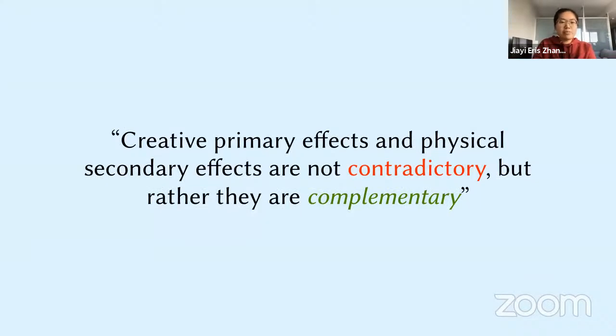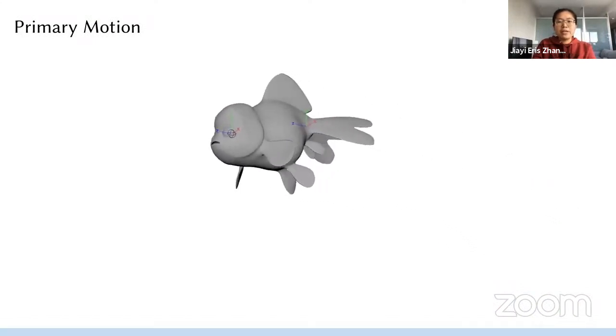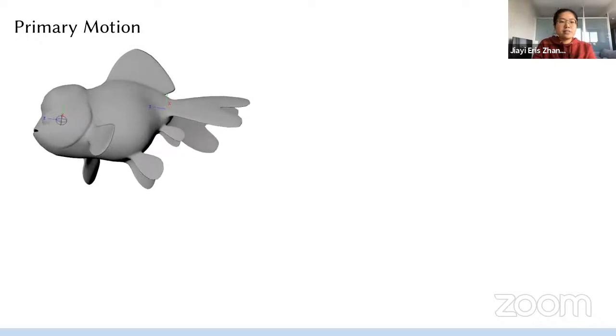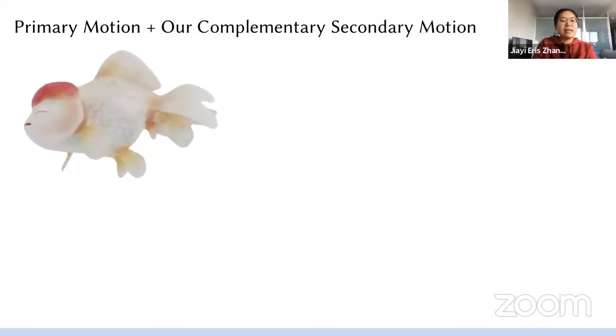Instead, we advocate that creative primary effects and the physical secondary effects are not contradictory, but rather they are complementary. We are going to show this observation is not just true conceptually, but also algebraically, such that the animation artists can use low-dimensional rigs to control the primary motion and rely on our complementary dynamics framework to add interesting elastodynamic secondary effects.